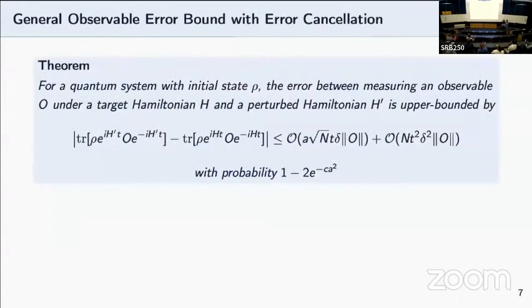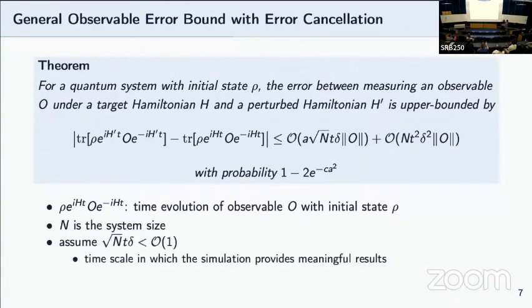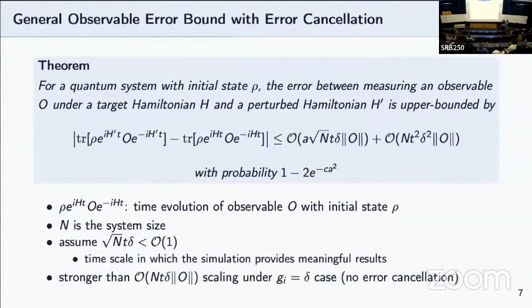So next, this is our main result. First, if we have an arbitrary observable O and ideal Hamiltonian H, we time evolve it with respect to the initial state rho and take the trace of it. So we average over this observable value over time, and we want to see how much this observable value differs when it's under the target Hamiltonian H and the perturbed Hamiltonian H prime. Here n is the system size. With this bound, which has the leading order term of square root n times t times delta, where delta is a characterization of the local error, we're able to arrive at this bound. Here, in order to have a time scale in which simulation provides meaningful results, we assume the leading order term is less than one. This is stronger than the previous bound that scales linearly in number of qubits when we assume that the G_i terms is just simply a constant, which means that there's no error cancellation.